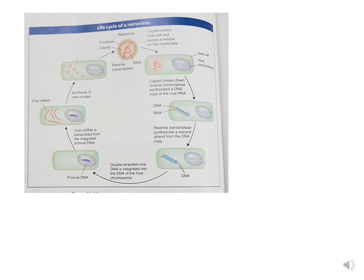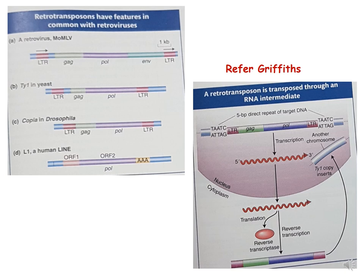This is the life cycle of a retrovirus, as given in the Peers textbook — you can refer to Peers for this. These diagrams show retrotransposons compared across TY in yeast, copia in Drosophila, and human LINE elements. This is not specifically covered in the course syllabus, so you can refer to Griffiths and Peers to understand this further. In the Griffiths diagram, you can see that transcription produces an RNA, which is then reverse-transcribed by reverse transcriptase into DNA, and this DNA gets inserted into the target DNA.